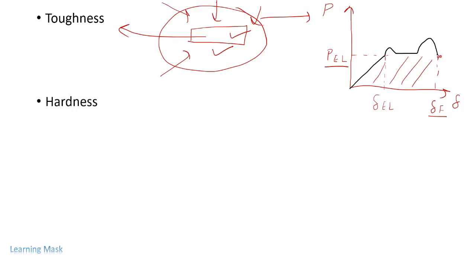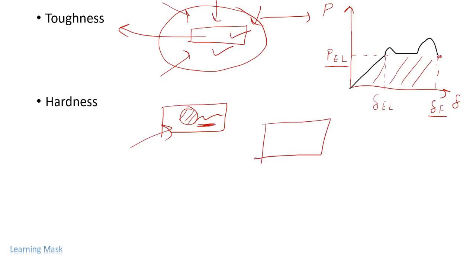The next property is hardness. Hardness is the ability of a material to resist indentation or surface abrasion. For example, if we drop a heavy ball on a material and no depression, cracks, or abrasion form, then the material is hard. So hardness is the ability of a material to resist surface abrasion, cracks, and indentation.